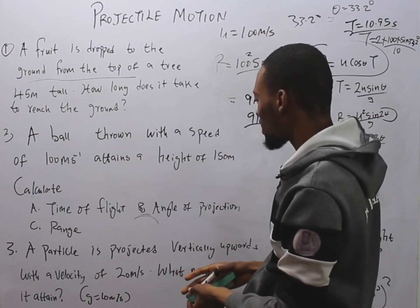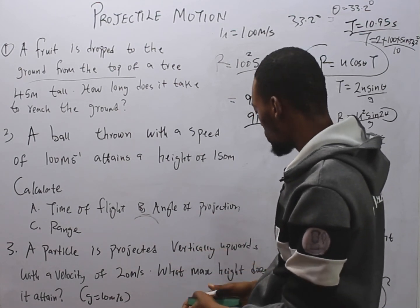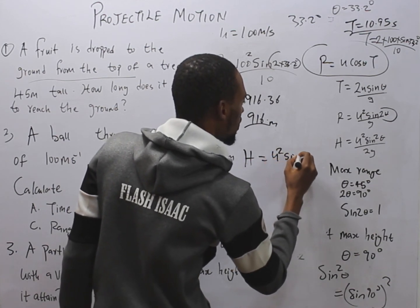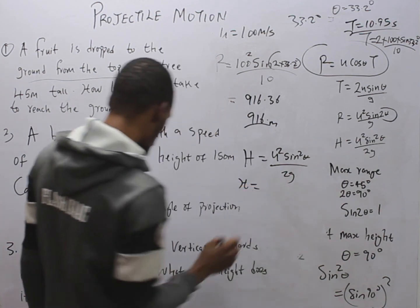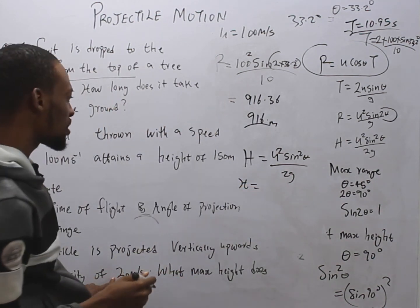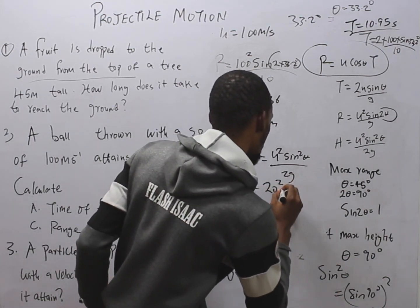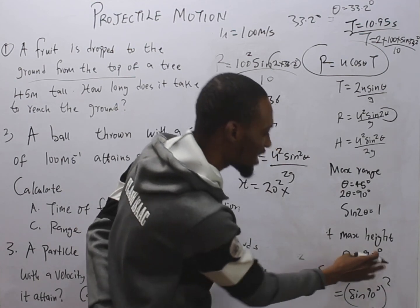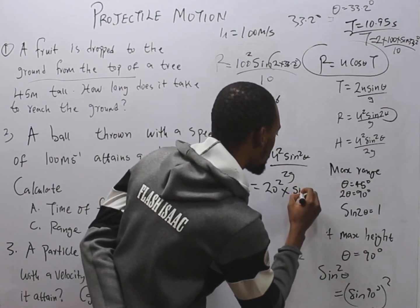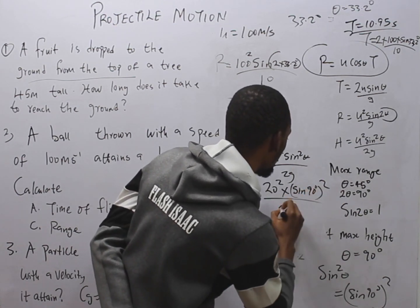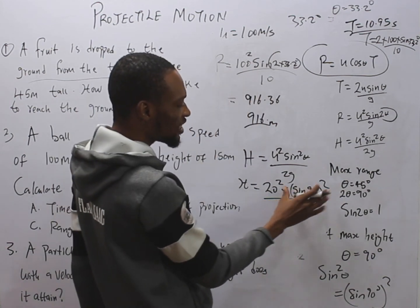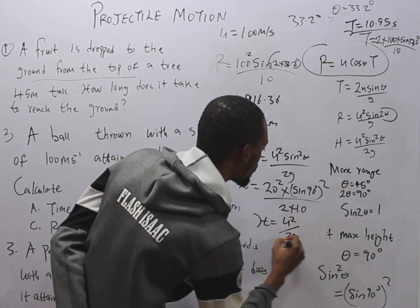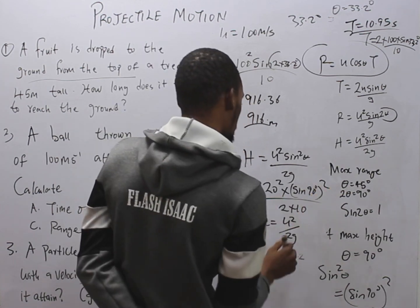Question 3: A particle is projected vertically upwards with a velocity of 20 m/s. What maximum height does it attain? Using H = u² sin²θ / (2g), and since it is projected vertically upwards, θ = 90°, and sin 90° = 1. So H = 20² × 1 / (2 × 10) = 400 / 20 = 20 meters.